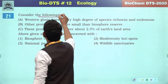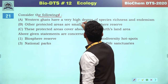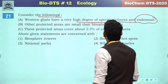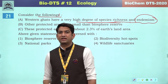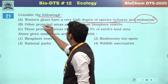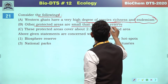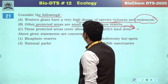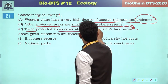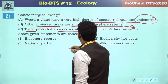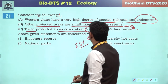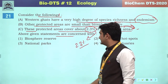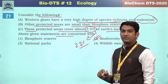Consider the following statements. Western Ghats have a very high degree of species richness and endemism — these are biosphere reserves in India, but endemism specifically refers to hotspots. Other protected areas are smaller than biosphere reserves. Biodiversity hotspots cover about 2.3% according to recent data, though NCERT mentions less than 2%. So all above statements are concerned with the biodiversity hotspot — the second will be the correct answer.